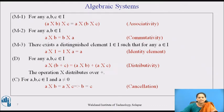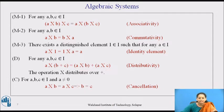Similarly, we have the properties of multiplication. M1: for any a, b, c belonging to I, (a × b) × c = a × (b × c) — again known as associativity. M2: for any a, b belonging to I, a × b = b × a, known as commutativity. M3: there exists a distinguished element 1 belonging to I such that for any a belonging to I, a × 1 = 1 × a = a, called the identity element.